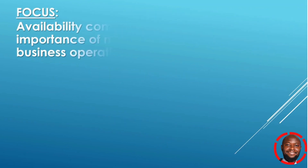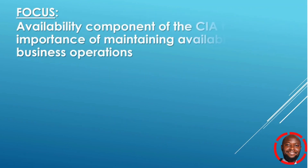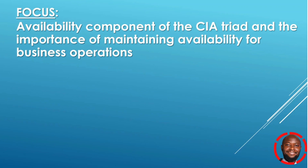If you remember in our last video, we talked about the fundamental concepts of information assurance as being the CIA triad — confidentiality, integrity, and availability. The focus of Domain 2 is on the availability component of the CIA triad and the importance of maintaining availability for business operations.